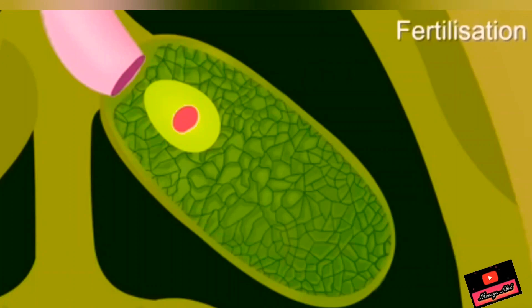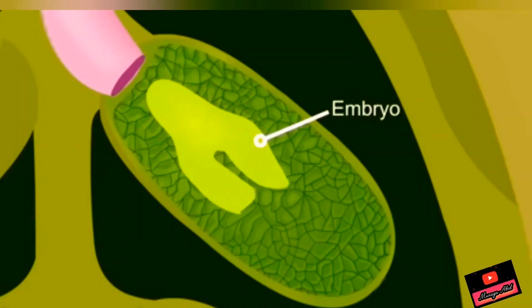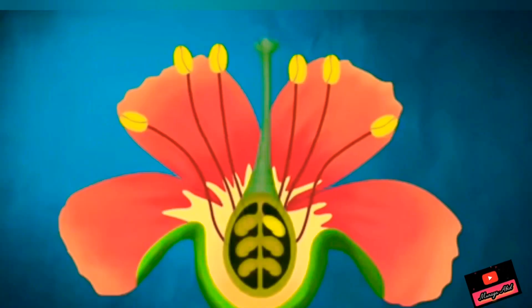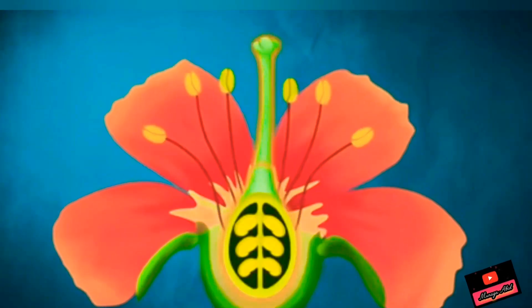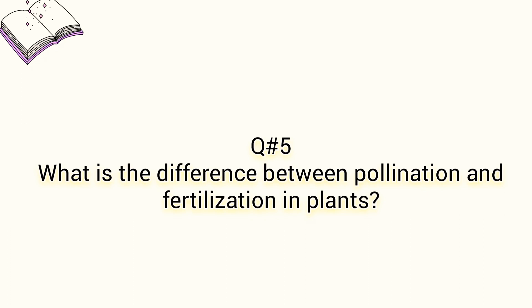This forms a zygote. Fertilization results in the formation of a seed. Fertilization is defined as the union of male and female gametes. The fertilized ovule develops into an embryo, the ovule becomes the seed, and the ovary becomes the fruit.